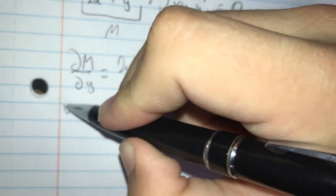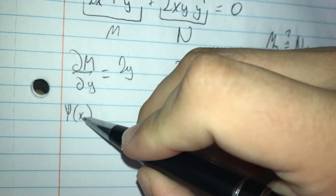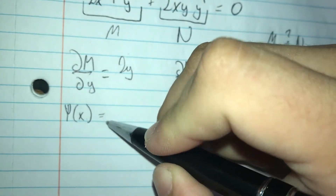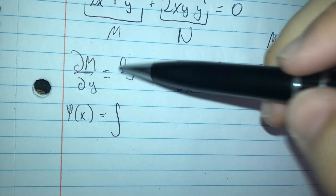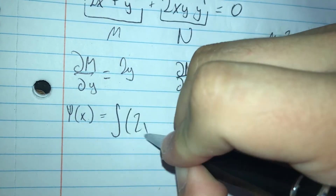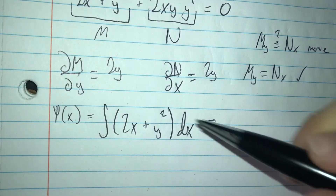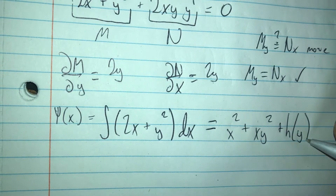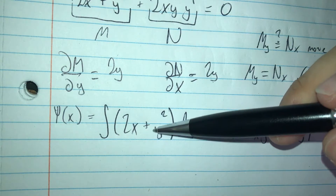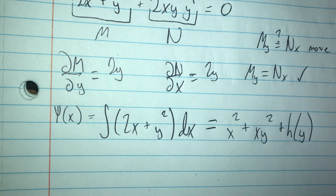Now we use the Greek letter psi. We say psi as a function of x is equal to the integral of M dx, so the integral of 2x + y² dx. That gives us x² + xy² plus some function h(y). The h(y) arises because when integrating with respect to x, any function of y alone is treated as a constant and must be accounted for. h(y) also includes an integration constant.